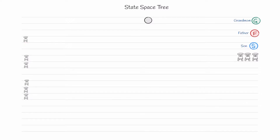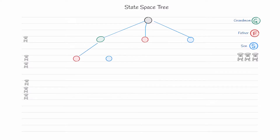With only one chair, grandmom can sit, or father can sit, or son can sit — so we get three solutions at the leaf nodes. If we add another chair, then on the path where grandmom is already sitting on the first chair, father or son can sit on the second chair. So we get two more solutions per path, giving six solutions when we have two chairs.